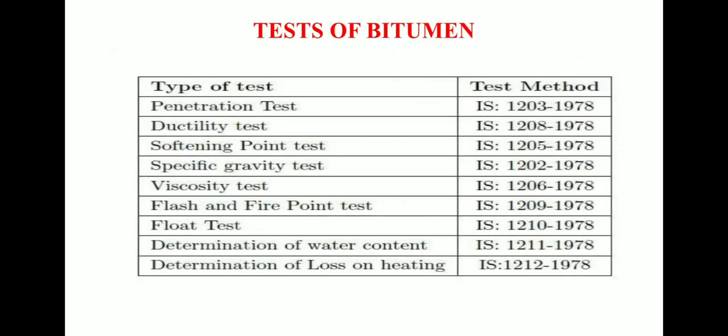This chart summarizes the types of tests and their suggested IS methods: penetration test — IS 1203:1978; ductility test — IS 1208:1978; softening point test — IS 1205:1978; specific gravity test — IS 1202:1978; viscosity test — IS 1206:1978; flash and fire point test — IS 1209:1978; float test — IS 1210:1978; and water content determination — IS 1210:1978.